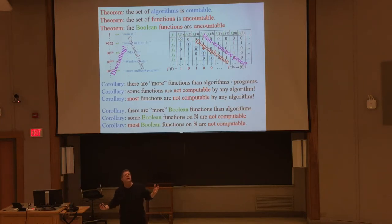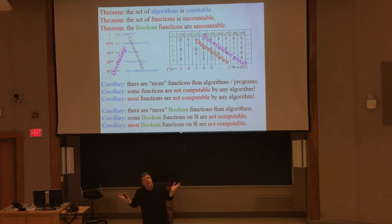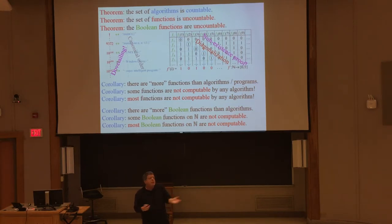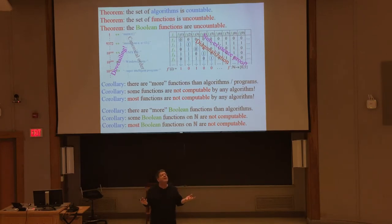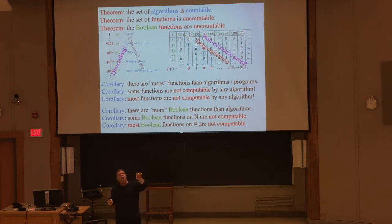There are limits even to what a deity can achieve: a deity cannot find an integer between a quarter and a third because it isn't there. It's not a matter of omniscience — it ain't there to be found. Nobody can display it because it doesn't exist. And coming up with an algorithm for the halting problem cannot be done by anybody. But you alluded to an important point: computation is a very general process — not restricted to iPhones, tablets, PCs, abacuses, or supercomputers. It's all of those and more.